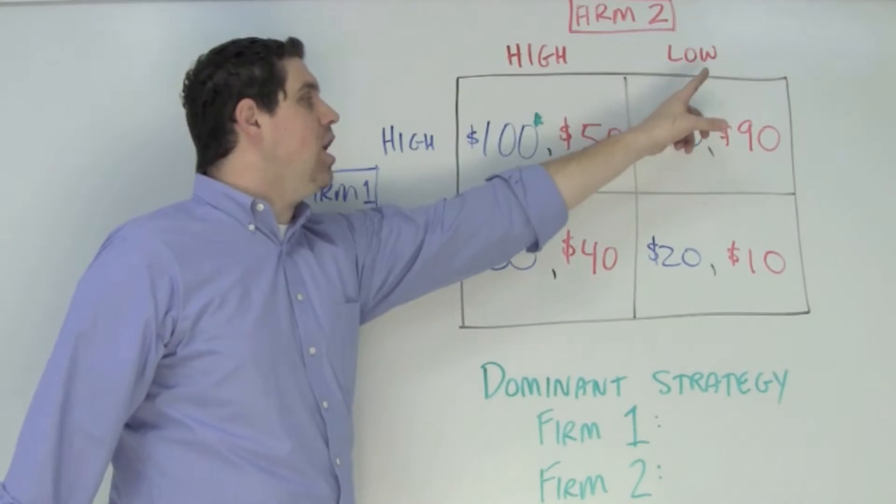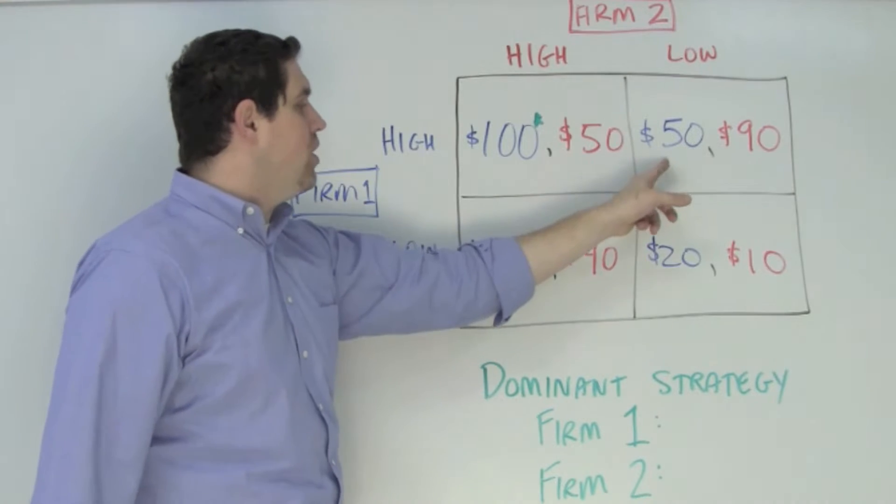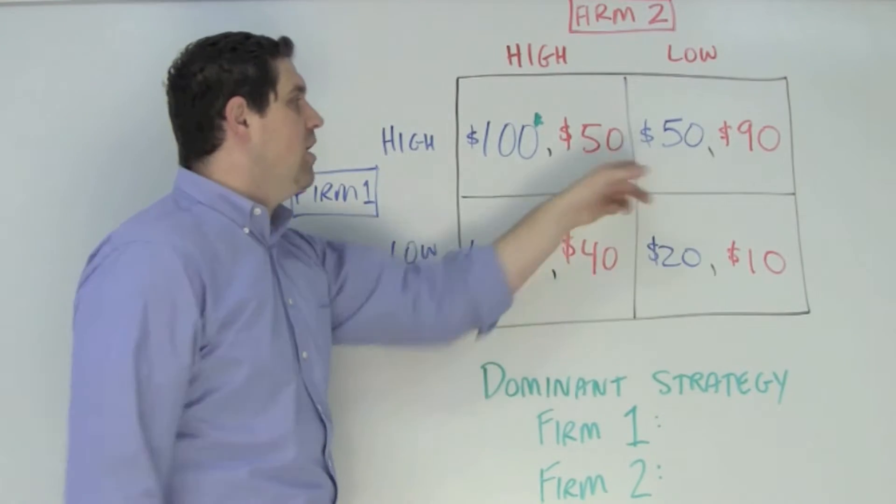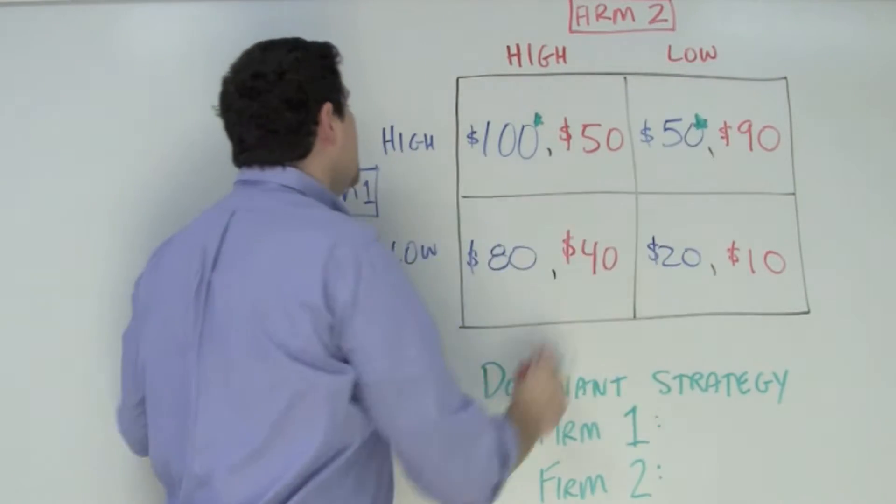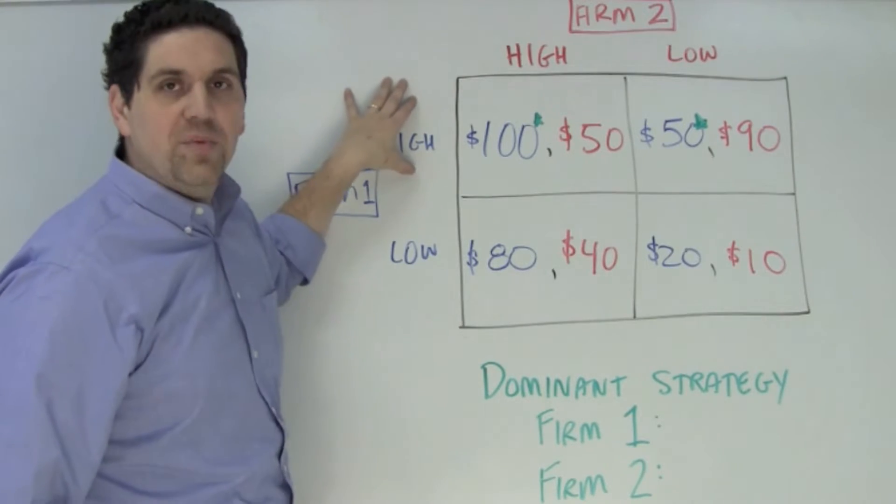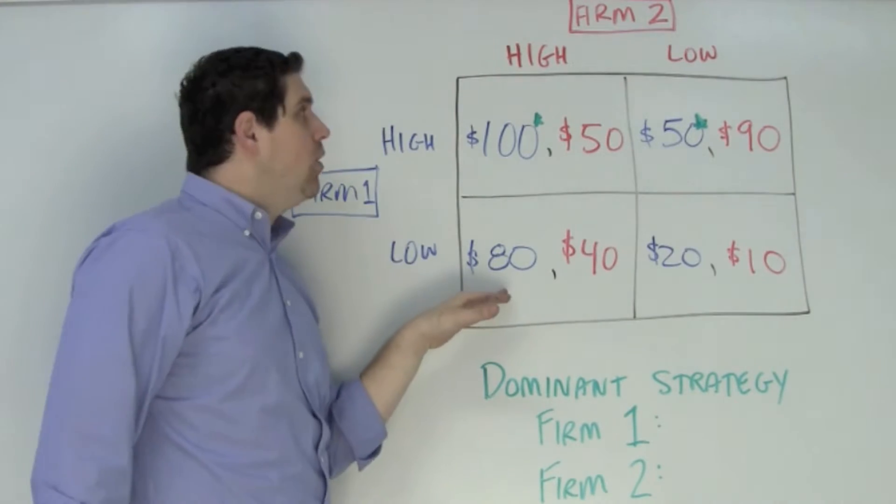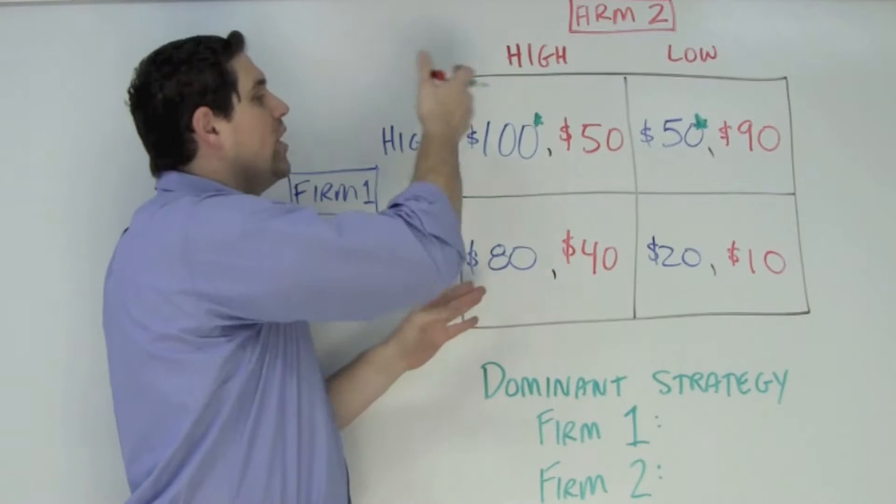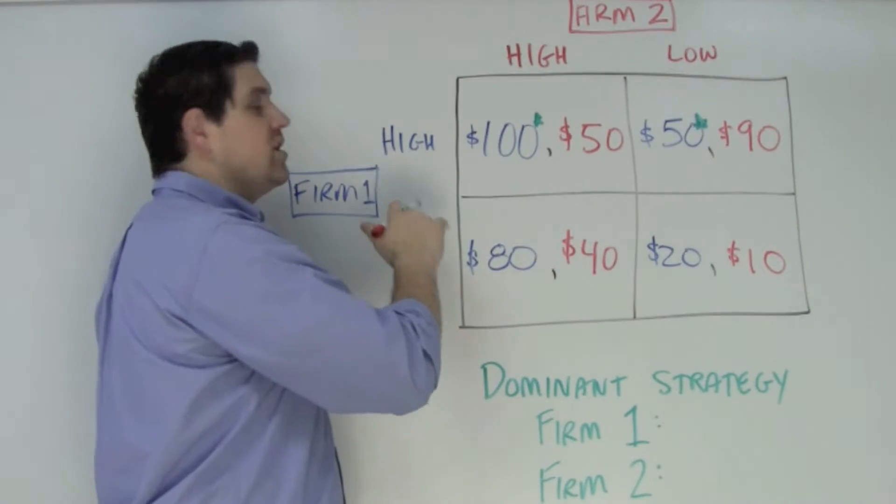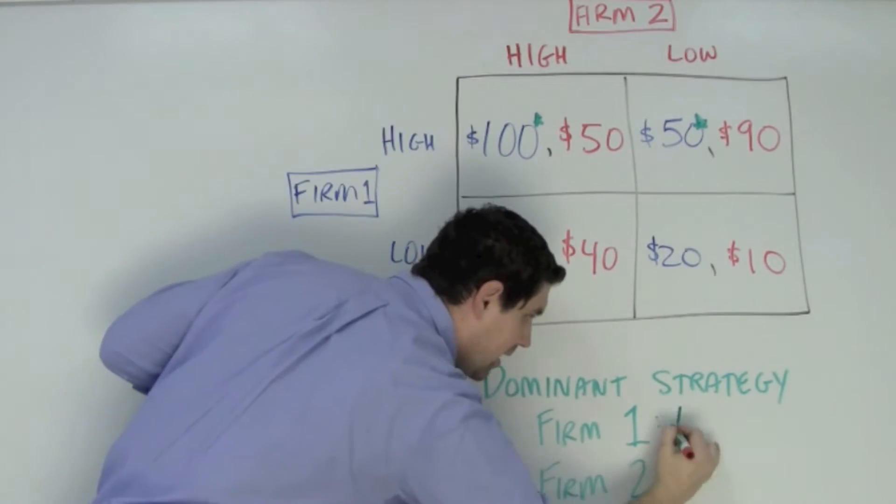If firm two prices low, firm one can go high and get $50 or low and get $20. Which one's better? Well, $50. Now notice, firm one should always price high. There's no reason ever to price low. If firm two goes high or low, they should always price high. So firm one's dominant strategy is pricing high.